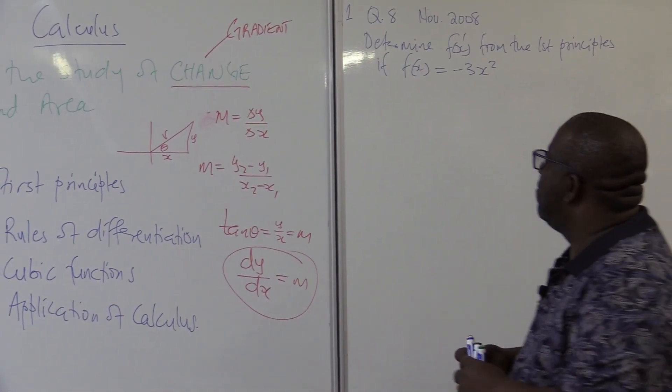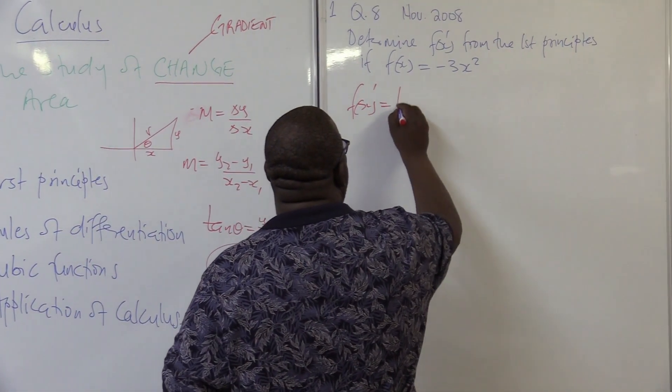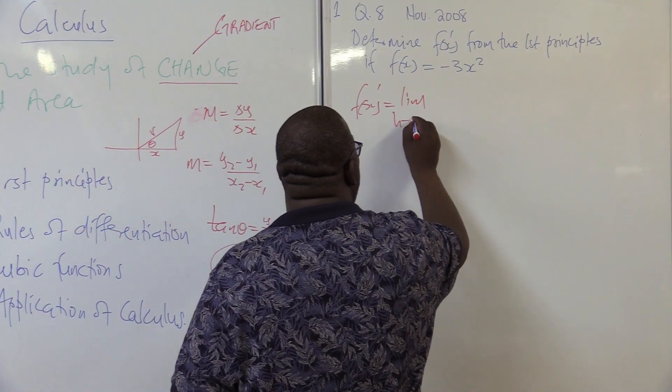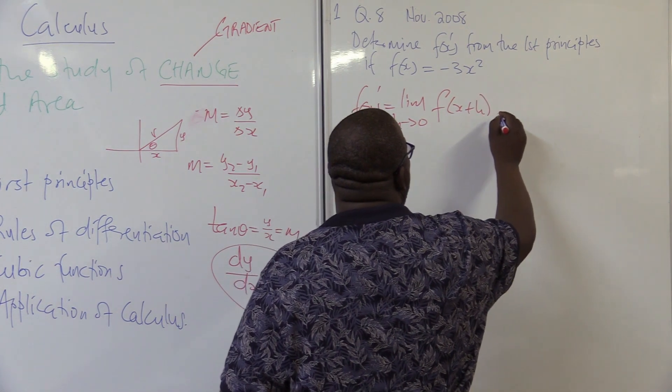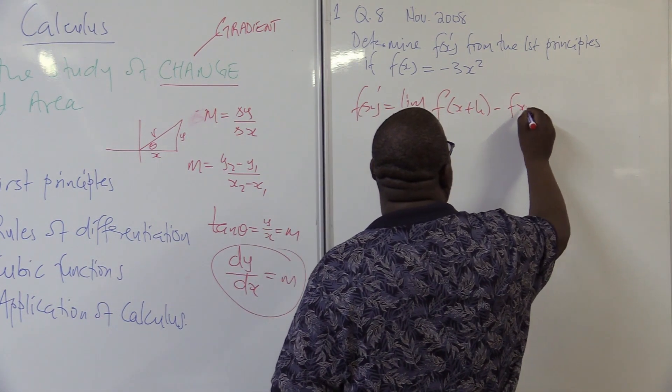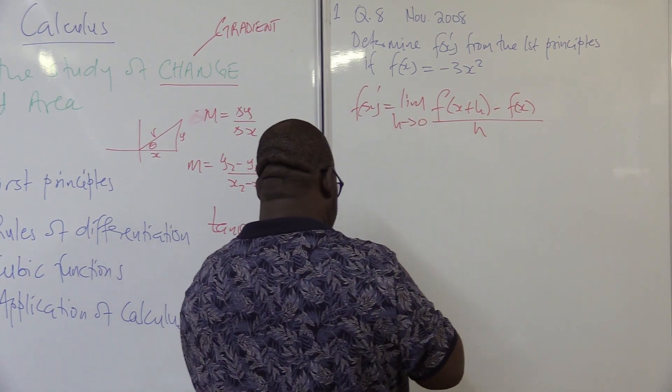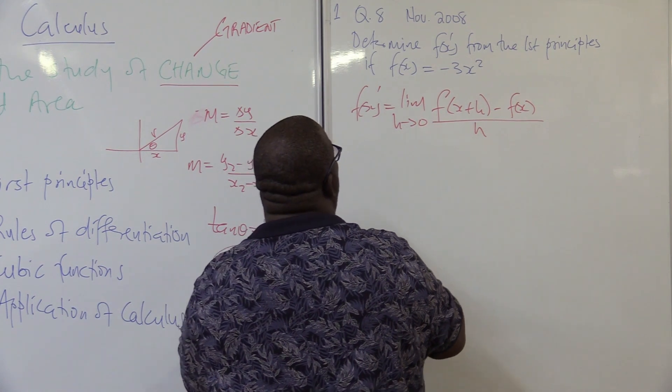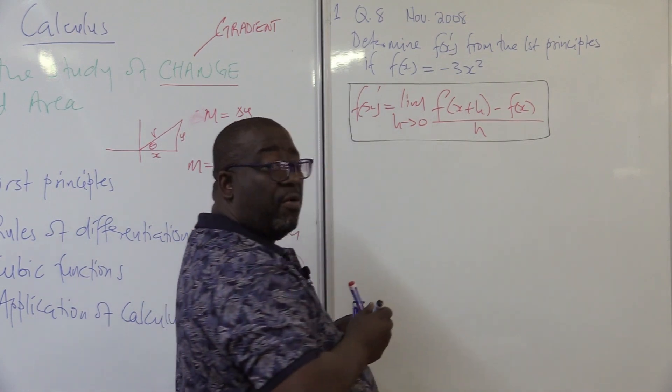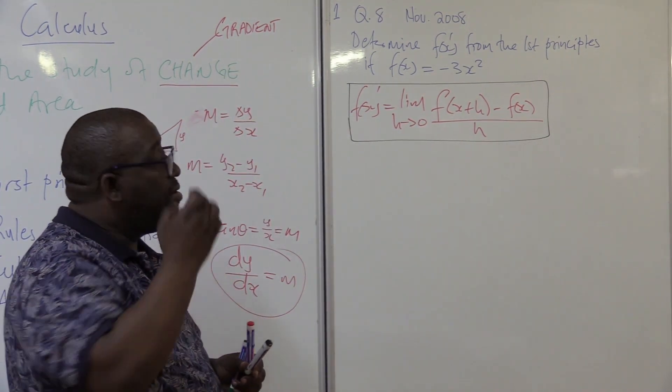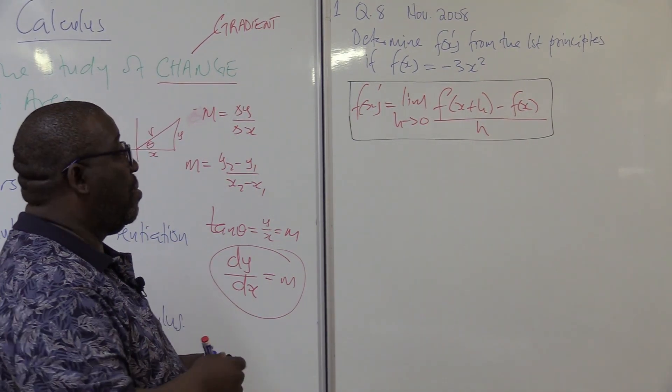There's a formula that we use for the first principle. It says F of X prime is equals to the limit as H approaches 0 of F of X plus H minus F of X all over H. This is the formula that we'll be using to calculate the gradient from the first principles. This formula I have given in the formula sheet. Make sure that you copy it correctly from your formula sheet because it has marks. Copying it correct, you get your one mark.